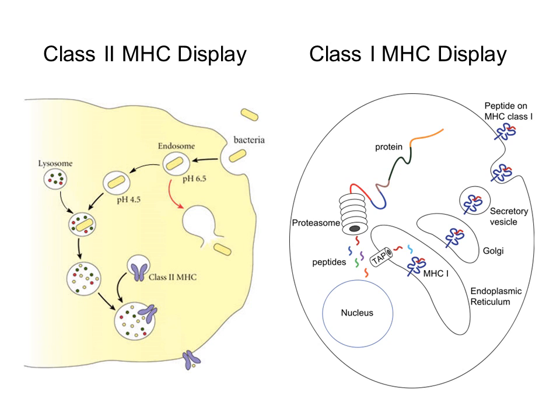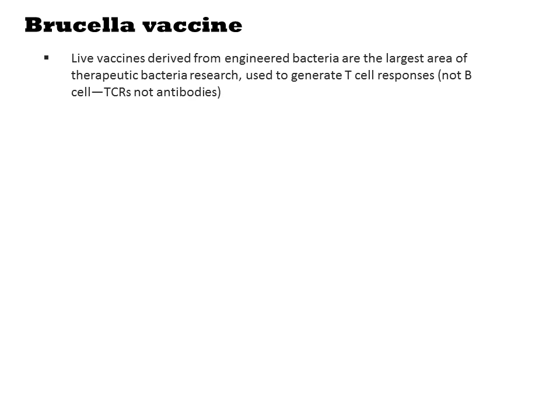Though it is not the normal order of events to elicit class 1 responses with a bacterium, it is possible to engineer bacteria that will do this. The advantage is that you can train the immune system to identify infected cells and kill them. This has utility for treating viral infections and cancer cells. Live vaccines derived from engineered bacteria are the largest area of therapeutic bacteria research, and they are used to generate T cell responses.